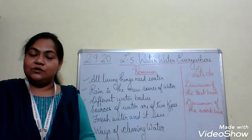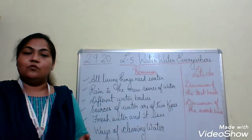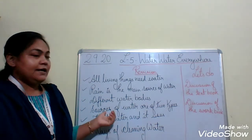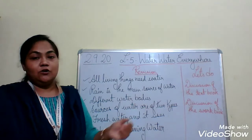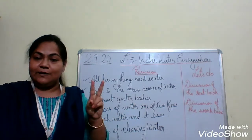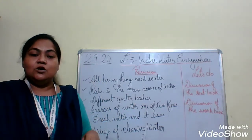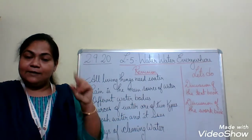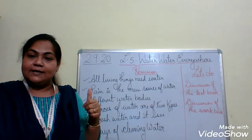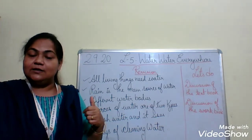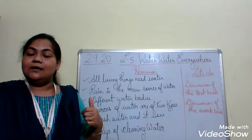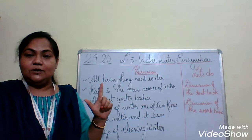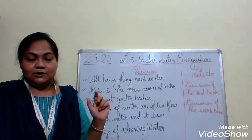These are the different sources of water we have learned. We have also learned that sources of water are of two types: number one is natural sources, and number two is man-made or artificial sources.